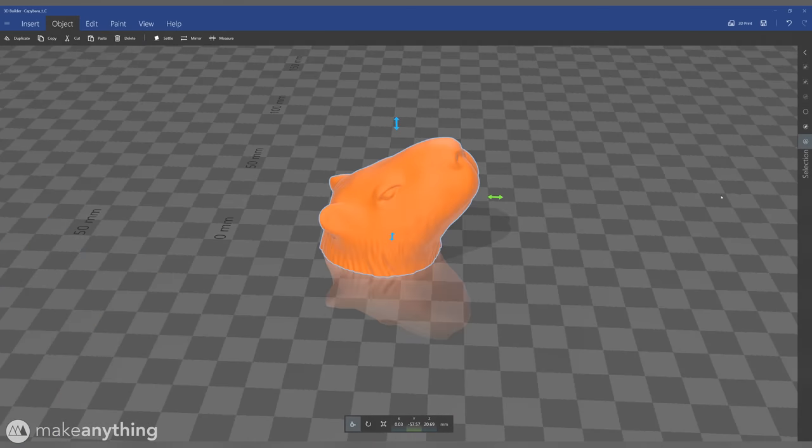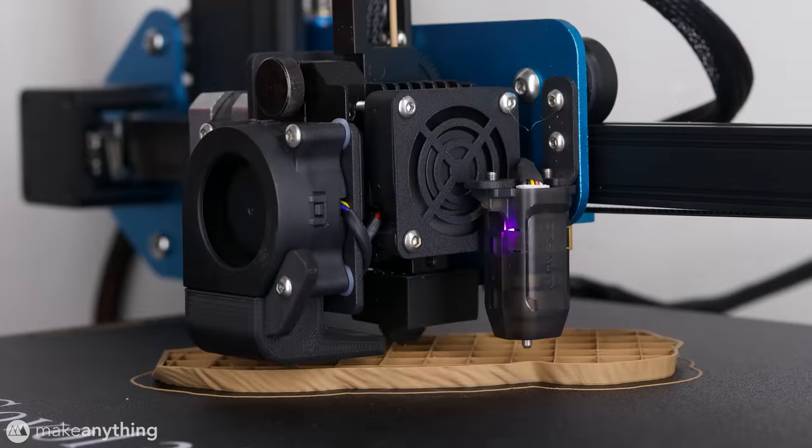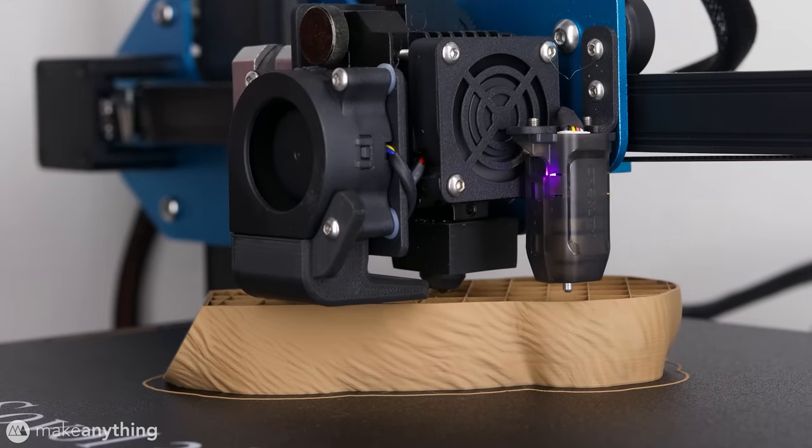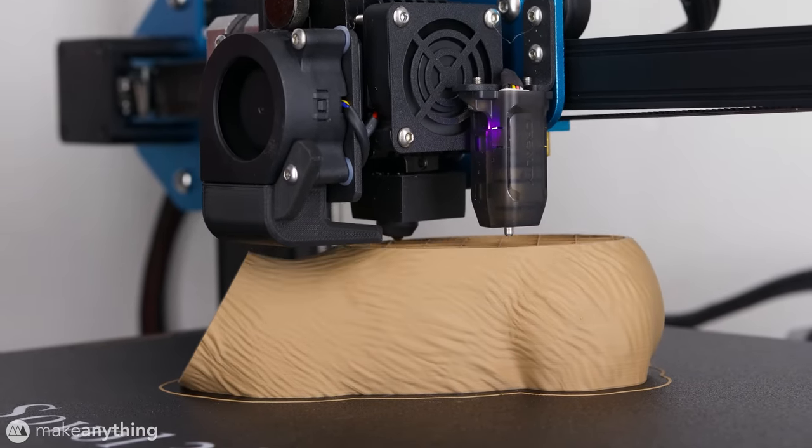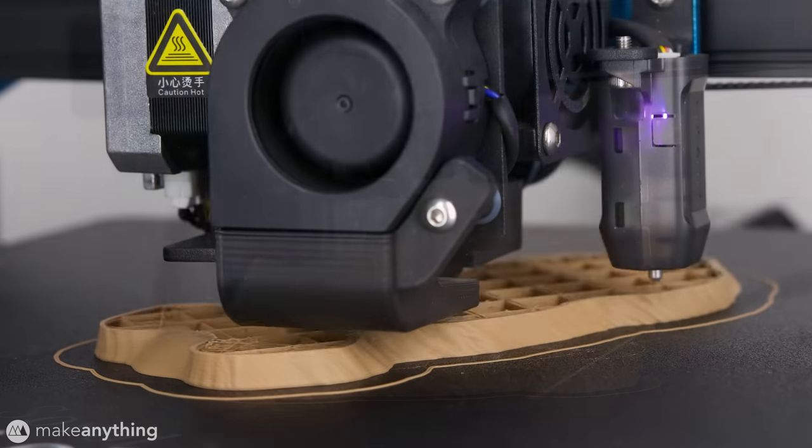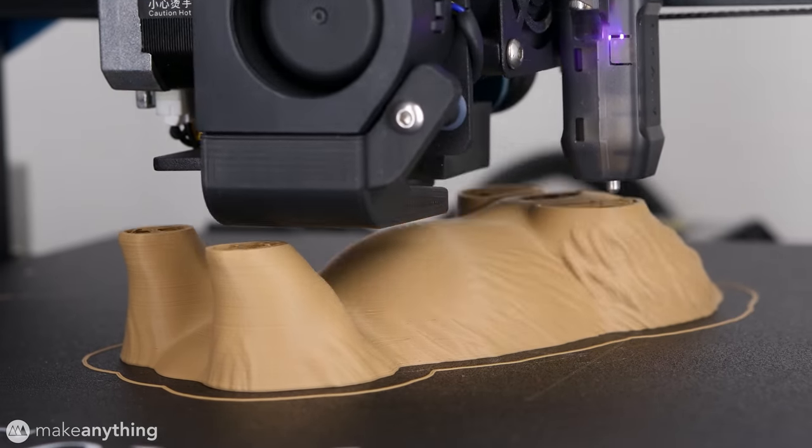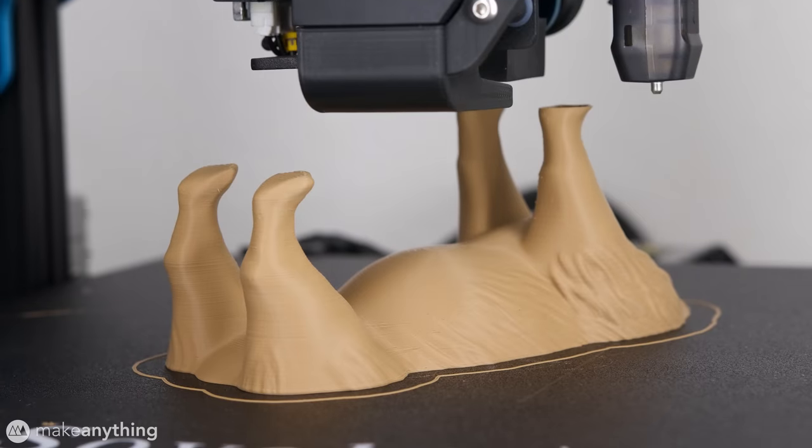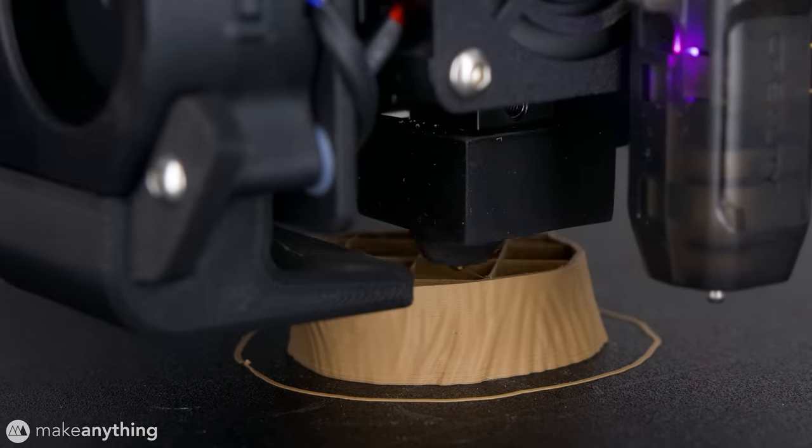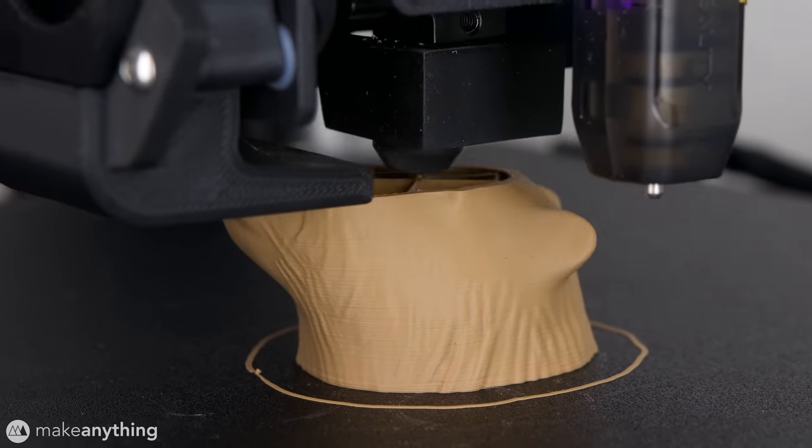Don't worry, buddy. Soon you'll be whole once more. I'm printing these parts on my new Sovel SV01 Pro 3D printer at 0.16mm layer height using this lovely Spider Maker 3D matte PLA. I love the flat look of this filament, and it's the perfect color for our capybara.